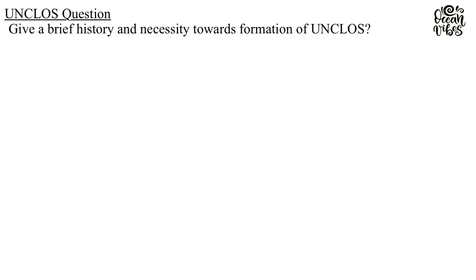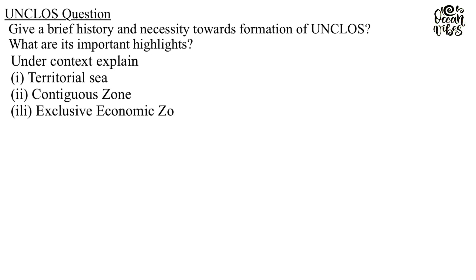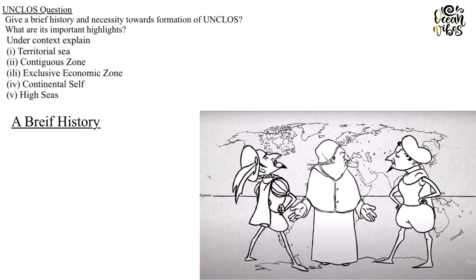Question: Give a brief history and necessity towards the formation of UNCLOS. What are its important highlights? Under context, explain: territorial sea, contiguous zone, exclusive economic zone, continental shelf, and high seas.